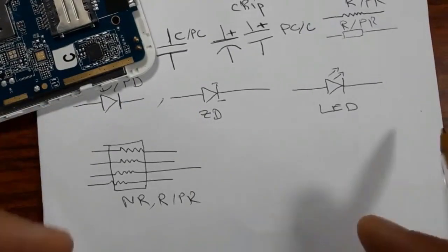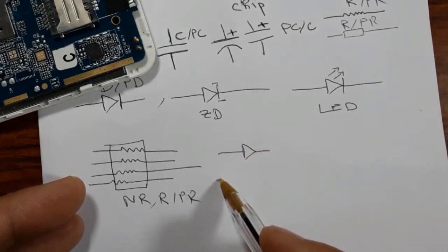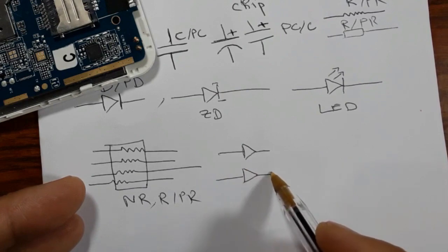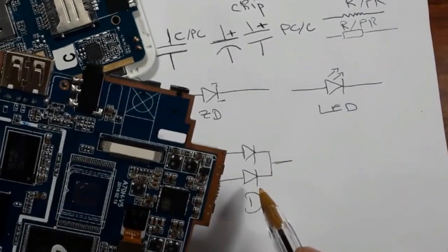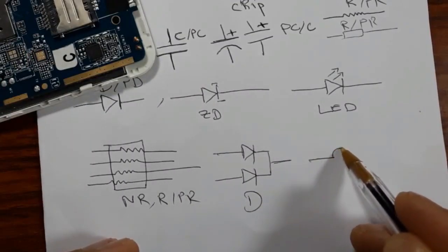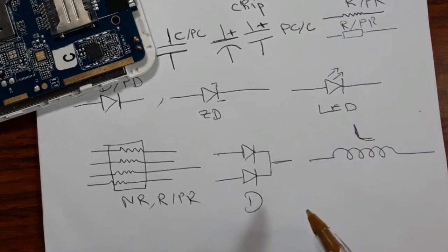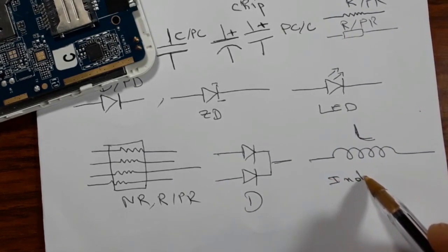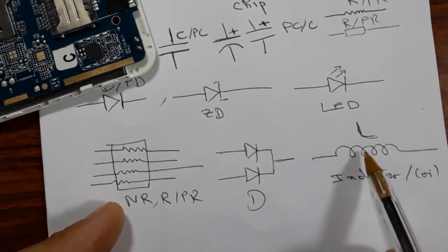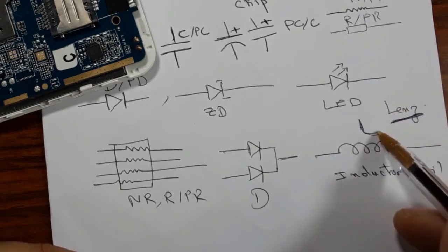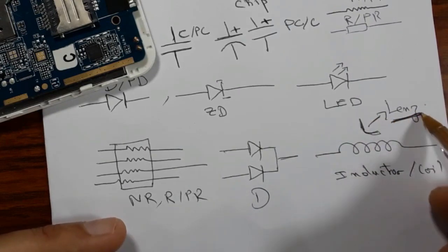You can also find composite diodes made of two diodes in this shape. For the inductor or coil, the symbol looks like this. The reference for an inductor or coil is L — L stands for the name of the scientist associated with inductance.